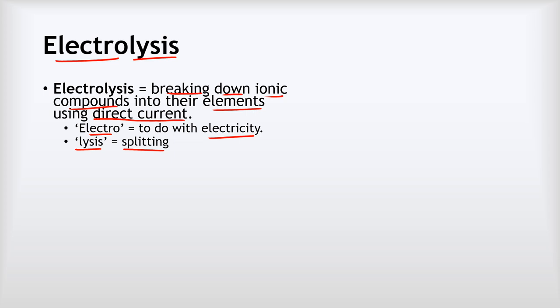We said that it has to be direct current. There are two forms of electrical current. The first is called direct current, which we often abbreviate to DC. This is the normal kind of electricity you would have met earlier in your education. The way it works is you have a negative terminal — something like the end of a battery — and electrons are repelled away from the negative terminal and attracted towards the positive terminal. The current flows in one direction, always from negative to positive.